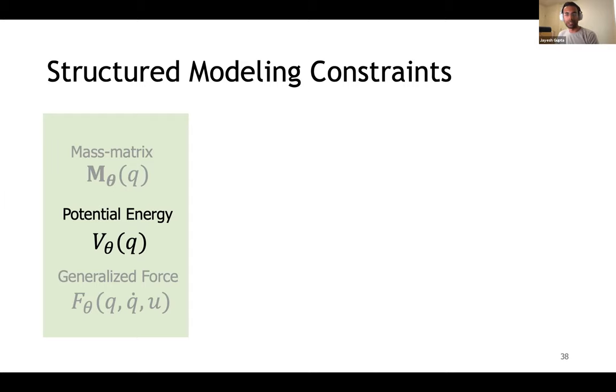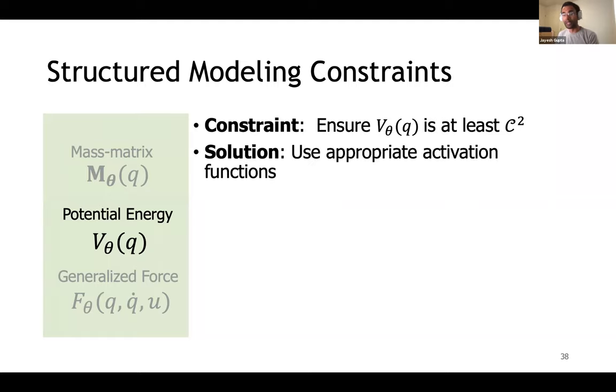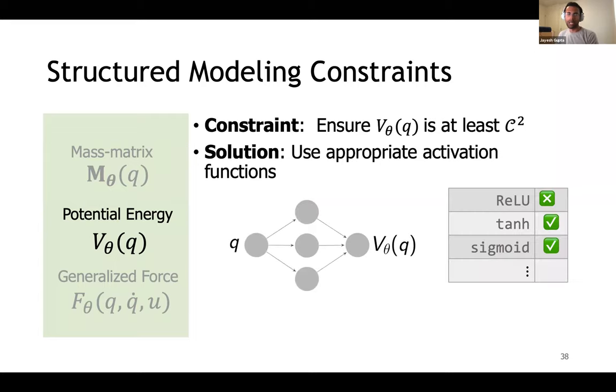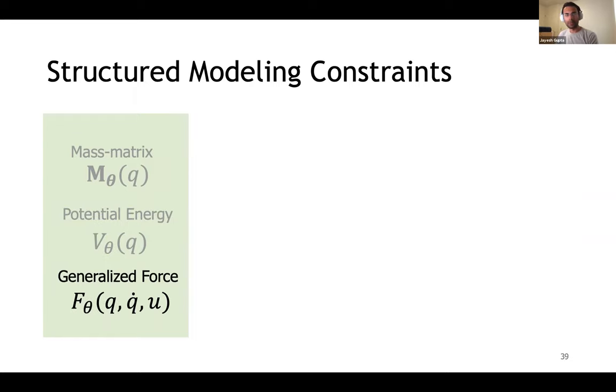Next up is modeling the potential energy function. Remember, we had to differentiate the potential function with respect to positions to compute the conservative forces. So that tells us it needed to be at least once differentiable. Now if we want to learn the parameters theta of the potential energy function by gradient descent, we'll have to compute gradient with respect to theta. So this tells us that it needs to be twice differentiable. This is fairly easy to ensure if you use appropriate activation functions. ReLUs are out, but tanh and sigmoid are all right.